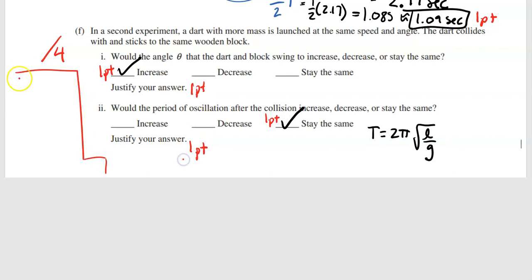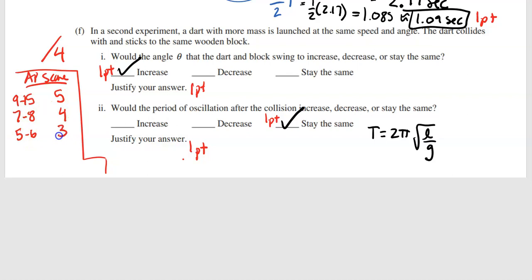Here's my approximate AP score rubric: scoring 9–15 points is around a 5; 7–8 points is about a 4; 5–6 points is a 3; around 4 points is a 2; and 0–3 points is roughly a 1. That's just my own approximation so you know roughly where you stand.